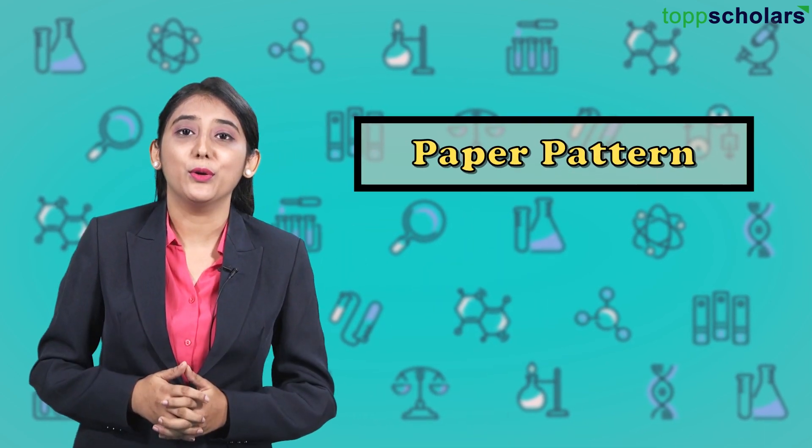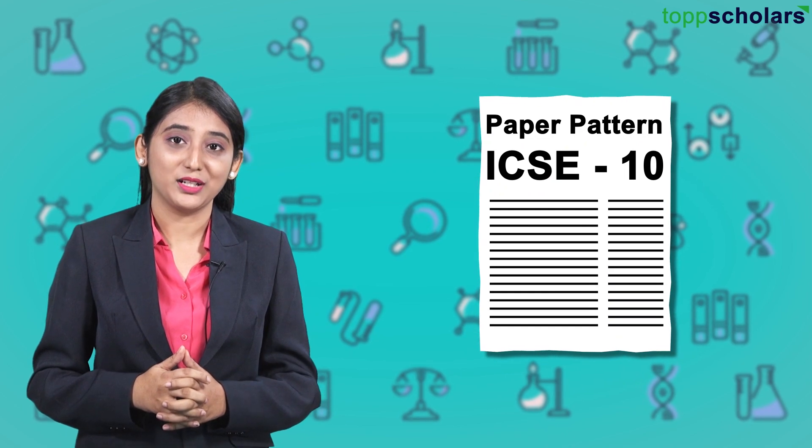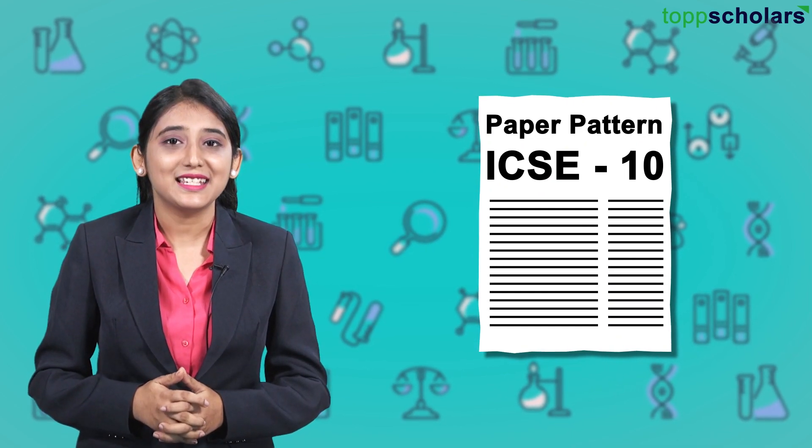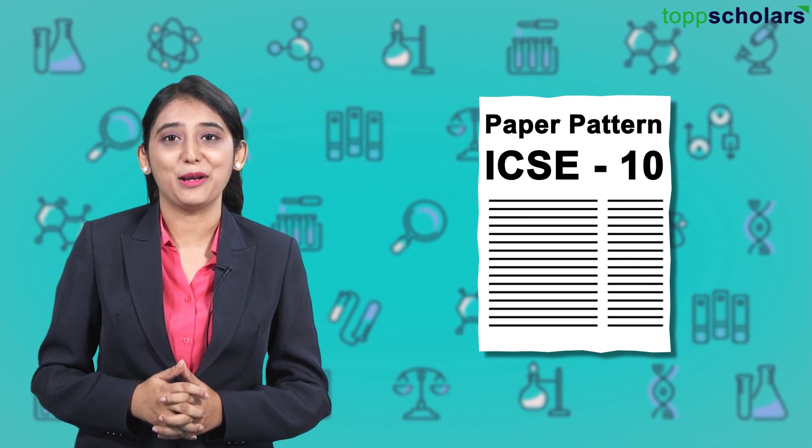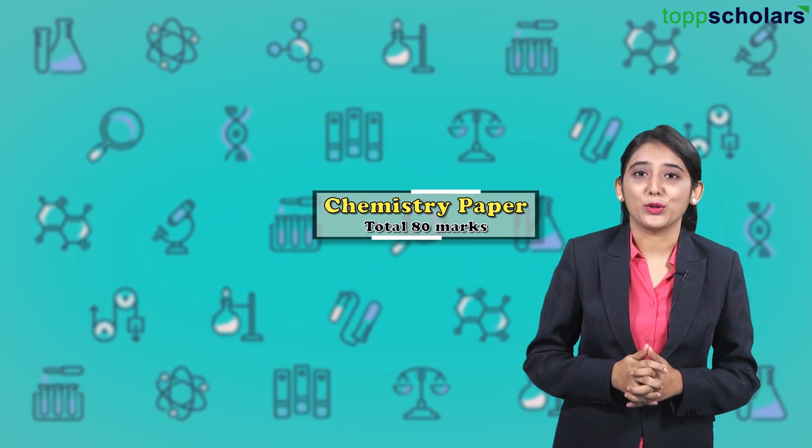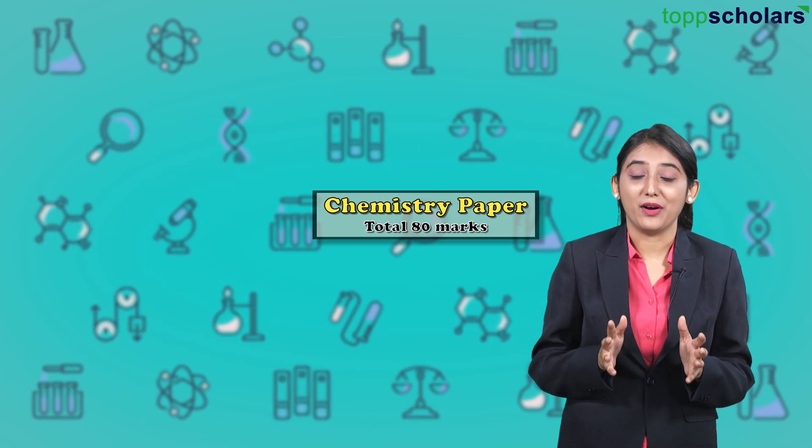So let us now have a look at the board paper pattern, which is based on the latest 2019 paper. Your chemistry paper has been allotted total 80 marks.